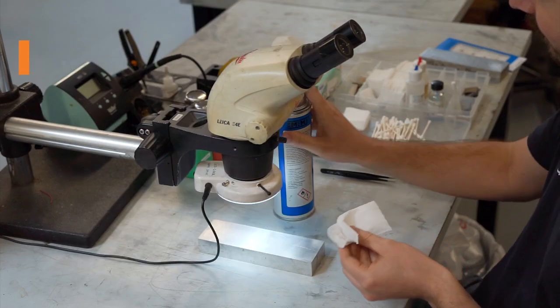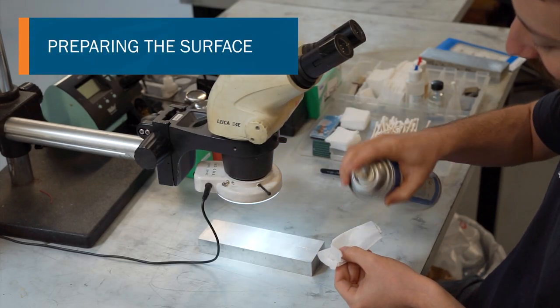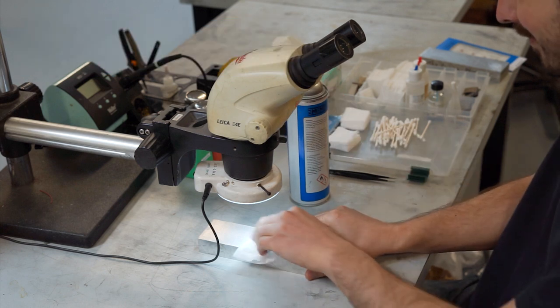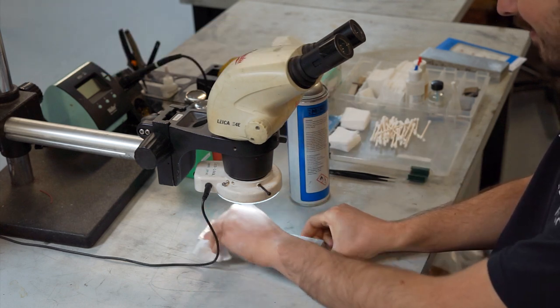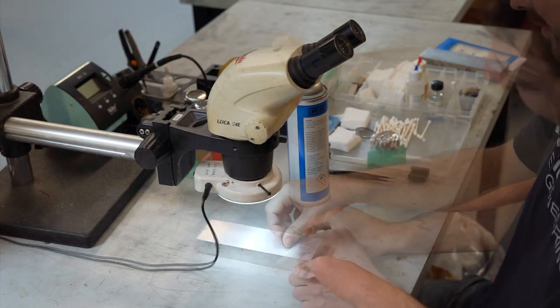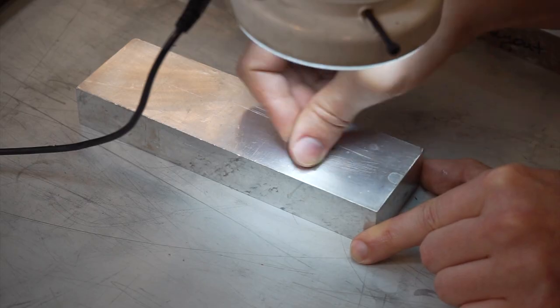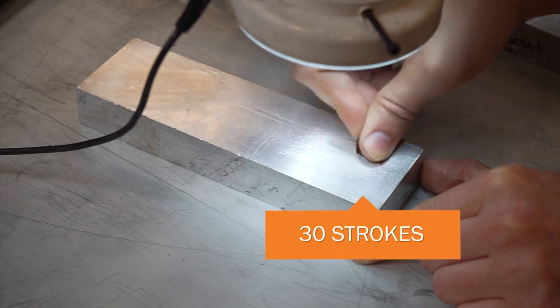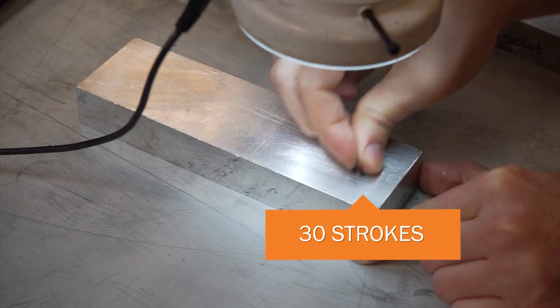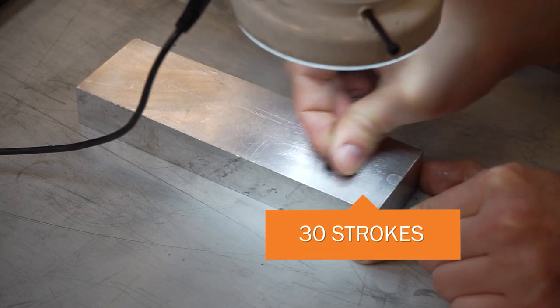The first step in applying a strain gauge is to prepare the surface. This includes solvent degreasing with a degreasing agent and isopropyl alcohol. This is followed by surface abrading over the strain gauge application area. 30 strokes should be done in the vertical, horizontal and diagonal directions.